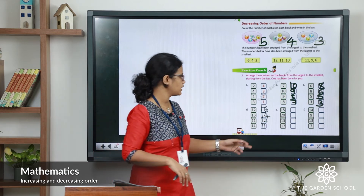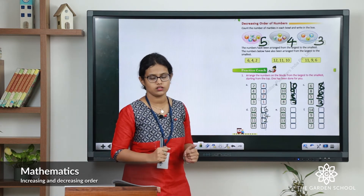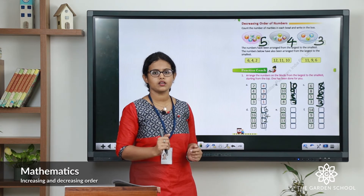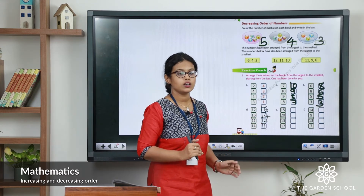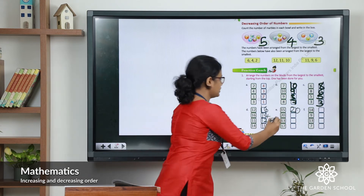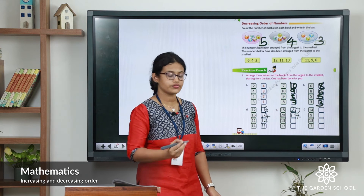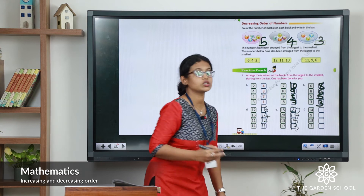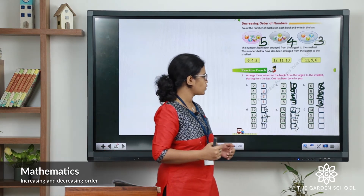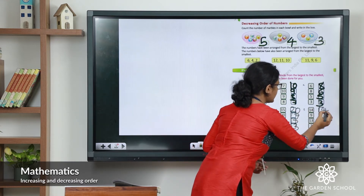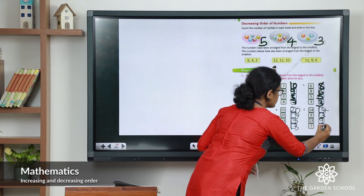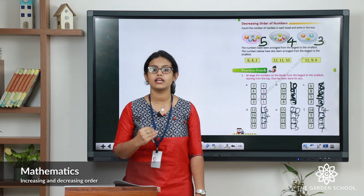Now let's do the next one: fifteen, twenty, thirteen, seventeen. Arrange in descending order. The answer starts with twenty, then seventeen, then fifteen, and then thirteen. So the correct order is twenty, seventeen, fifteen, thirteen. For the next question, the largest number is fourteen. The order is fourteen, thirteen, nine, and seven.